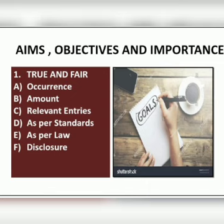The next point is as per standard. Vouching helps the auditor to verify whether an item is accounted as per the recognized accounting standard, whether they comply with the provisions, or whether they are following the policies and practices. Next is as per law. Vouching ensures that the transaction complies with the given provisions of law — for example, the Companies Act, the Income Tax Act, etc. Last point is disclosure. Vouching helps the auditor to ensure that an item is properly disclosed in the final account as required by Schedule 3 of the Companies Act 2013. For example, Schedule 3 requires that expenses like machinery repairs and repairs to buildings should be shown separately. The auditor can check at the time of vouching itself whether repairs are classified according to the requirements of Schedule 3 or not.